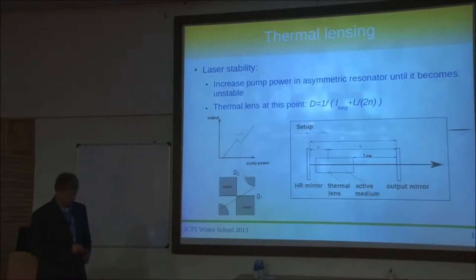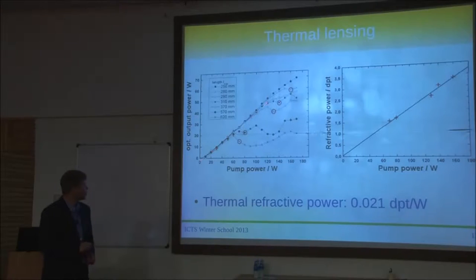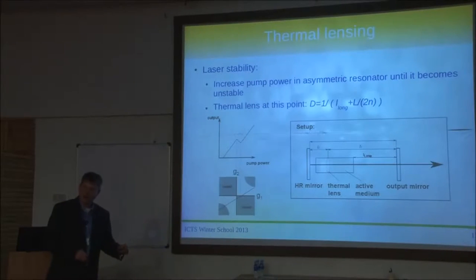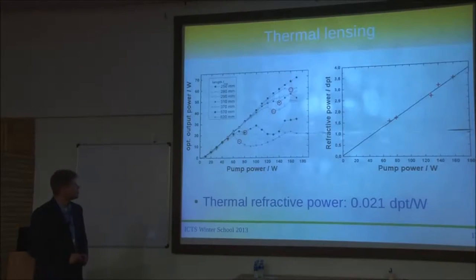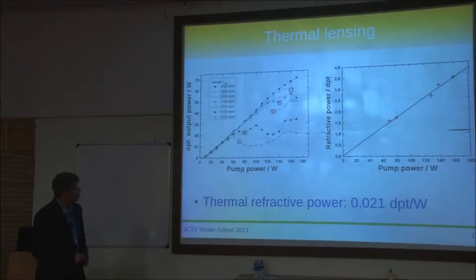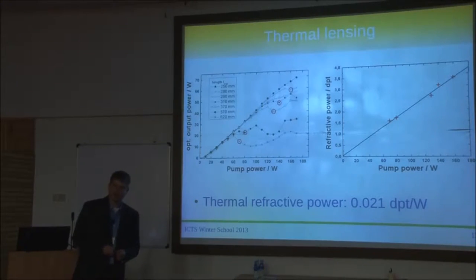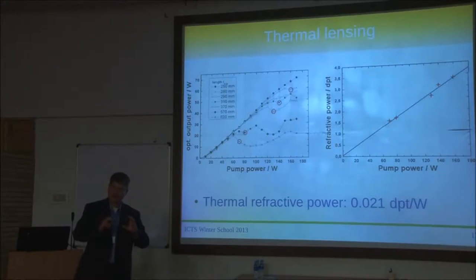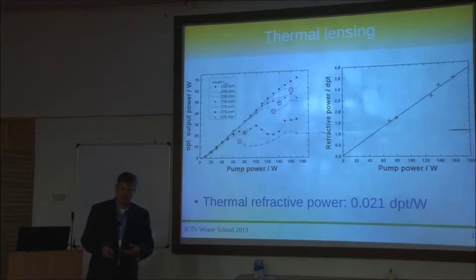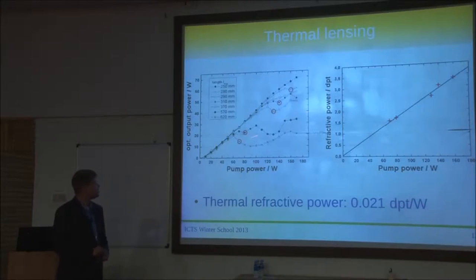The advantage of this method is that you don't need any test laser or camera — you just hook up an asymmetric resonator, crank up the pump power, and look at the output power. That gives you information on how the thermal lens behaves. For different resonator lengths you get a bunch of curves. The drawback is the curves don't always look like a nice sharp dip because the laser is multimode and you're not necessarily seeing a fundamental mode beam. So it's a simple but not very accurate method, giving a rough number — for example, at 200 watts of pump power you have about 200 mm focal length.